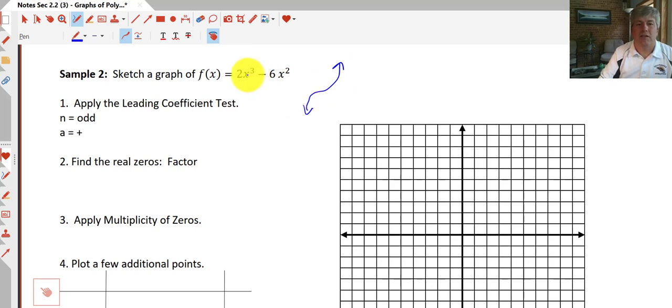The leading coefficient test, because n is odd and a is positive, well, that does confirm what we're going to have. Our end behaviors are going to be in opposite directions. And we've got a cubic, so it's going to mimic our cubic.